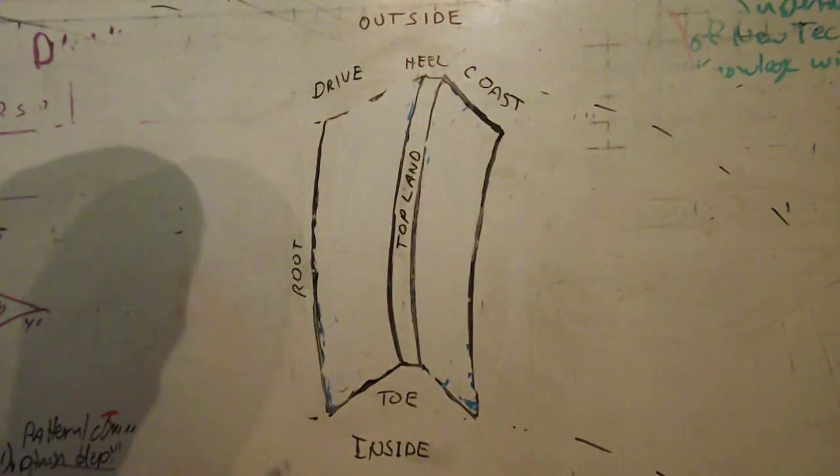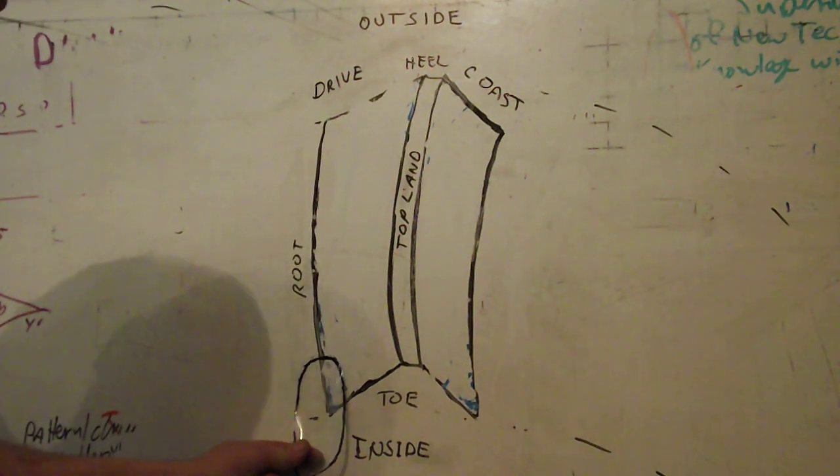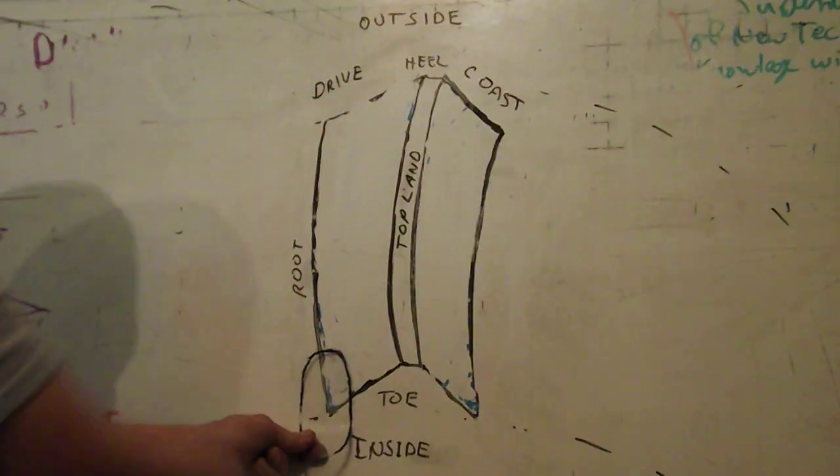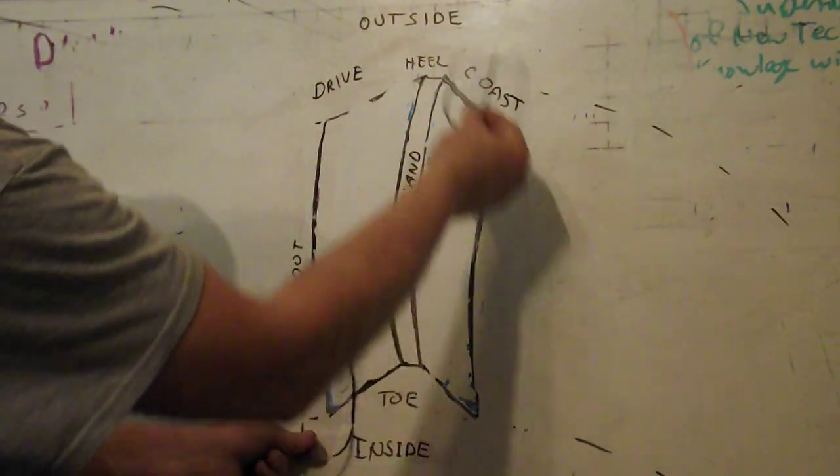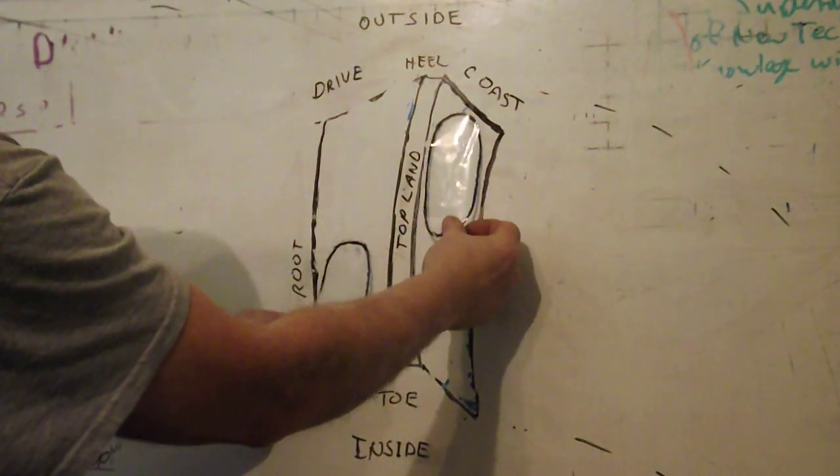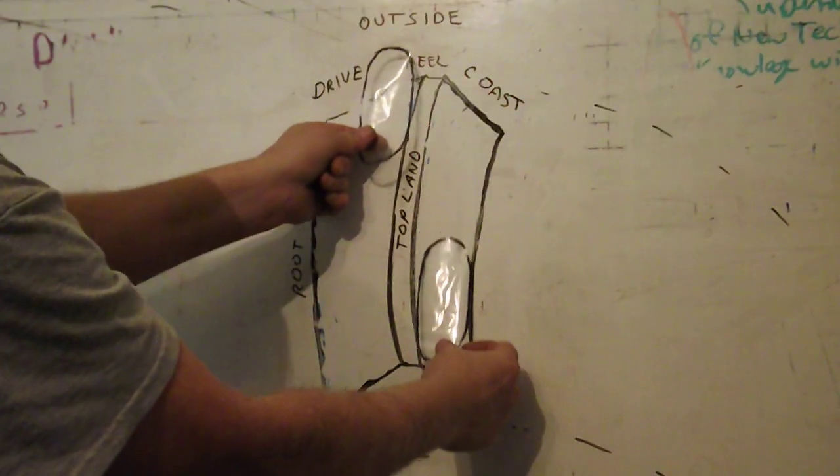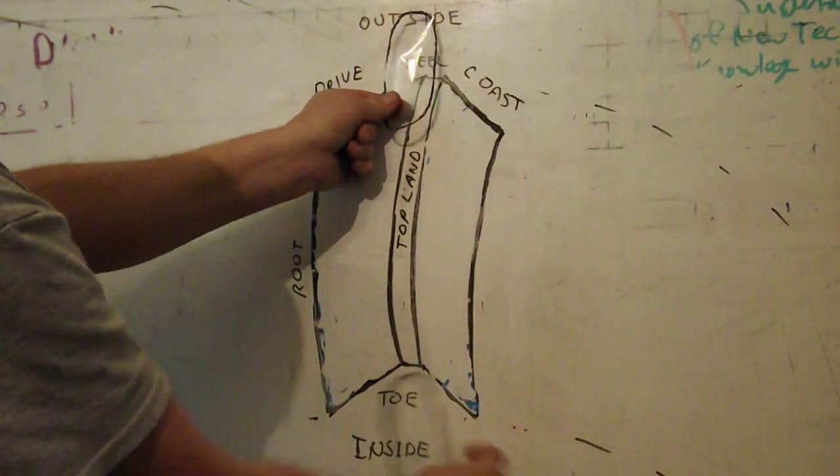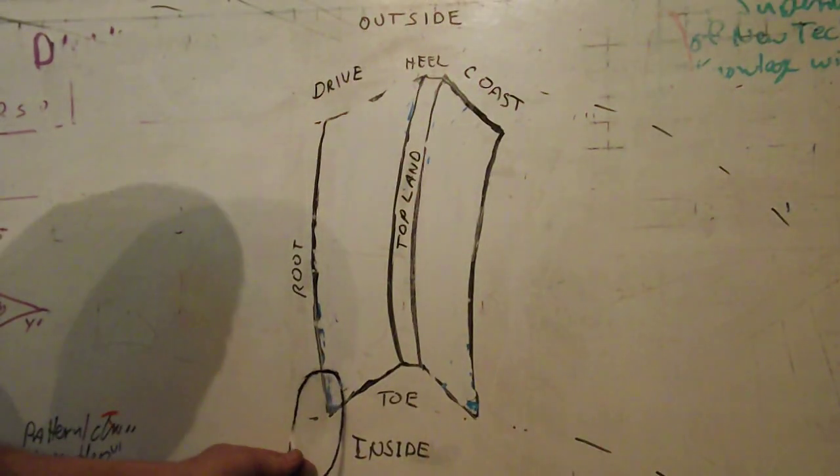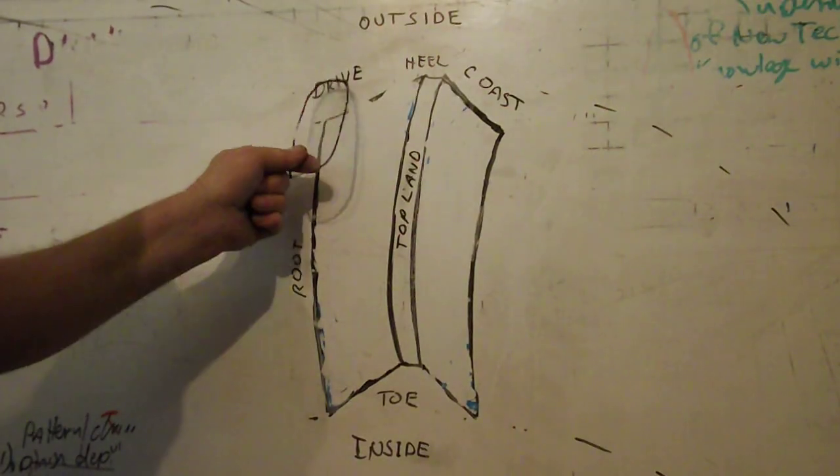If your pinion is in too deep, looking just to the drive side, you're going to see this corner pattern, and on the coast side you're going to see the opposite corner. As you pull the pinion out, those two patterns move, eventually center up, and as you keep going they're going to reverse themselves. It's pretty simple - if it's on the inside, move it out. If it's on the outside, move it in. That's on the drive side of the tooth.